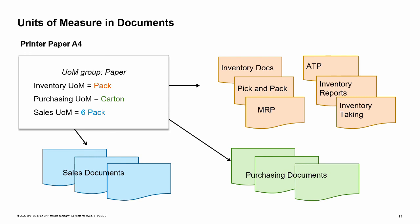Therefore, using our business example, a goods receipt PO for one carton will create an inventory posting for 24 packs, since each carton contains 24 packs.